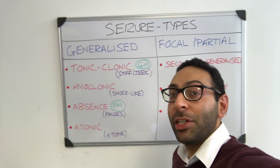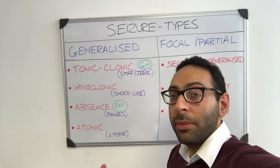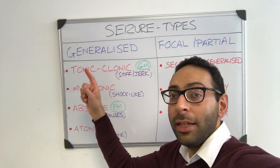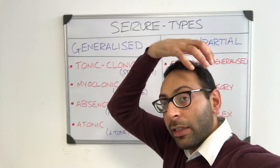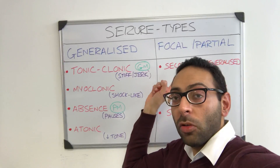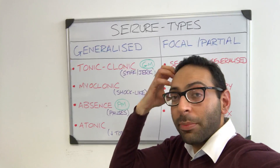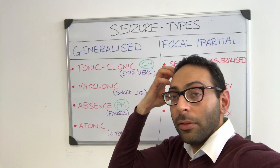Let's look at seizure classification, for example in epilepsy. There are two main types to think about: generalized seizures that affect the whole brain, and then focal or partial seizures — those that affect a localized part of the brain alone.